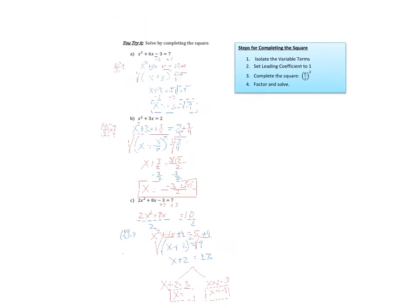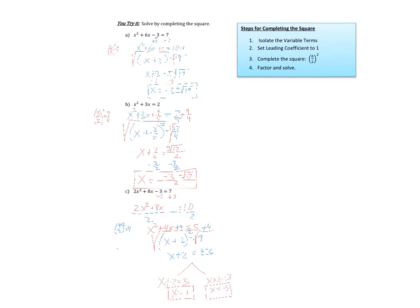Alright, so there are a few examples that work out in a few different ways. Sometimes we have a radical, sometimes we have a radical over an integer, and then sometimes we get a couple real values. So that's completing the square. I hope that helps.